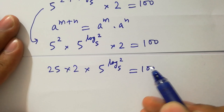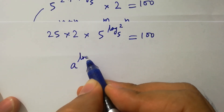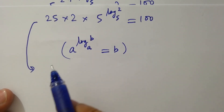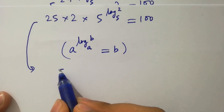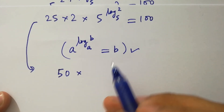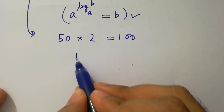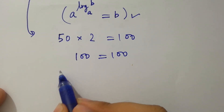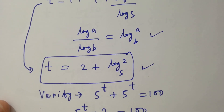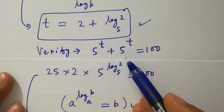Since a to the power log b to the base a equals b, we have 5 squared times 2, which is 25 times 2 equals 50, and 50 times 5 to the power log 2 to the base 5 equals 50 times 2 equals 100. Left hand side equals right hand side, which confirms that t equal to 2 plus log 2 to the base 5 satisfies the equation 5 to the power t plus 5 to the power t equal to 100.